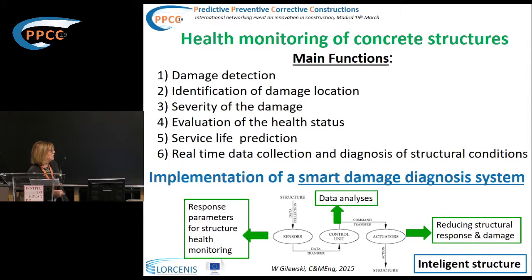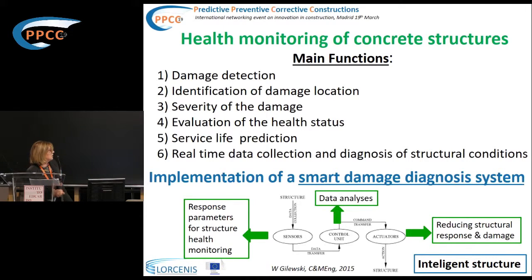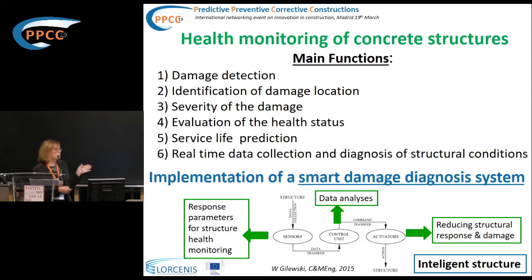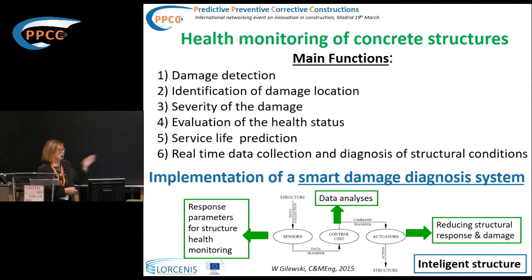What we need is an implementation in the structure — a smart damage diagnosis system. That means we need sensors or elements to measure specific parameters of interest for a given structure in a given environment. We need a control unit to collect and analyze all the data. If we introduce actuators in the structure, they are able to inform us if any correction is needed. This could lead us toward intelligent structures, able to take measures if there is any risk.